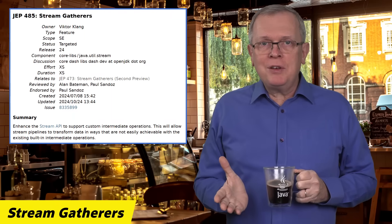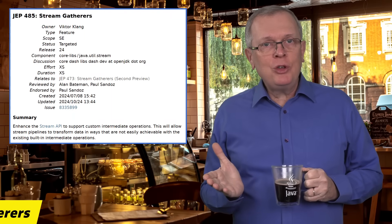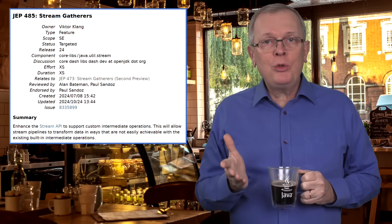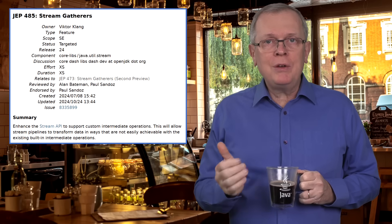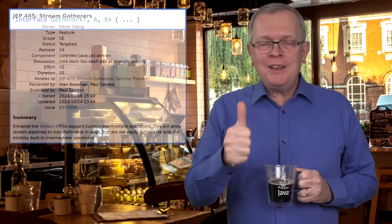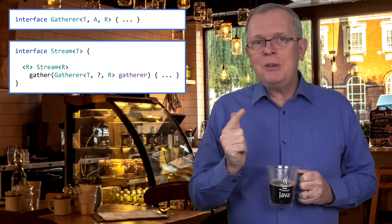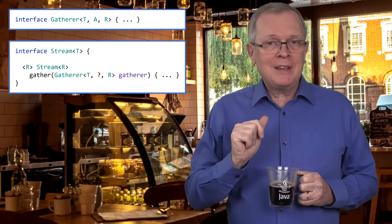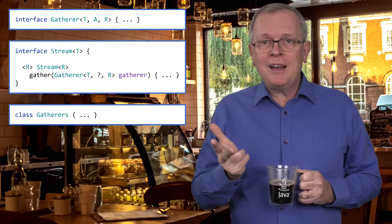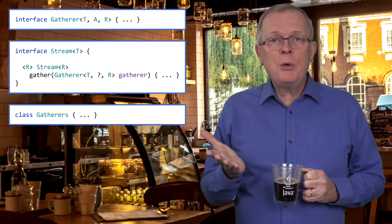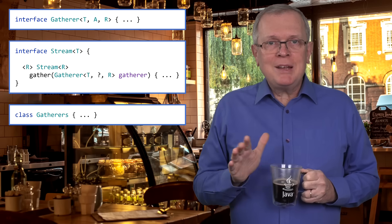JEP 485 is about adding a new feature to the Stream API called the Gatherer API. It gives you three elements: an interface, a method on the Stream interface that takes a gatherer as a parameter, and a factory class called Gatherers with pre-made gatherers.